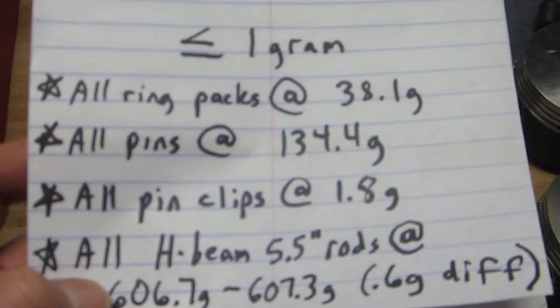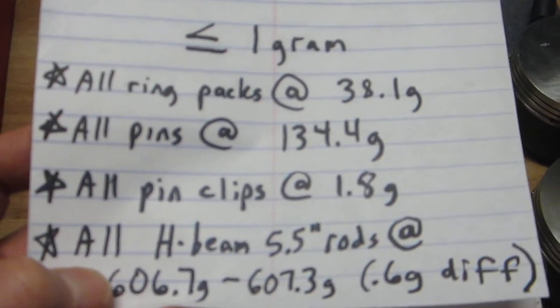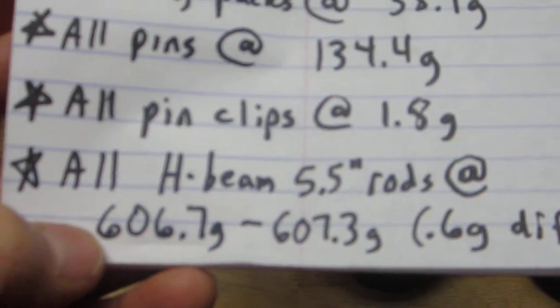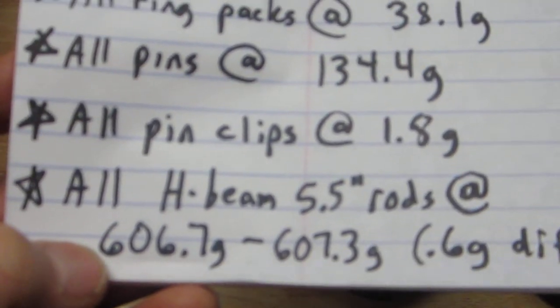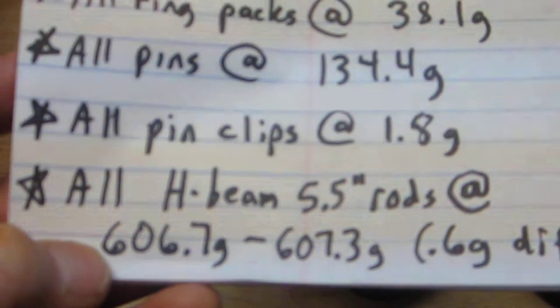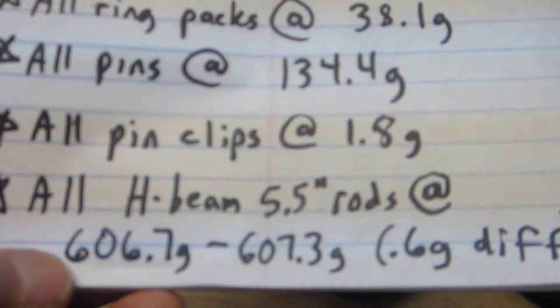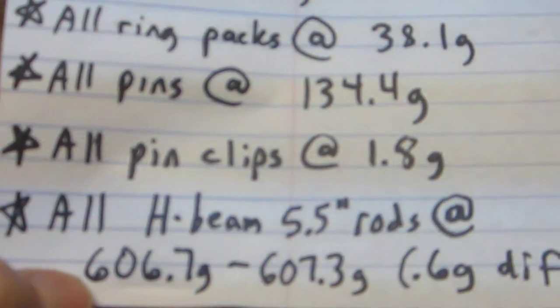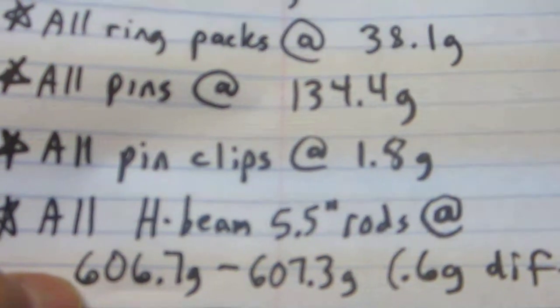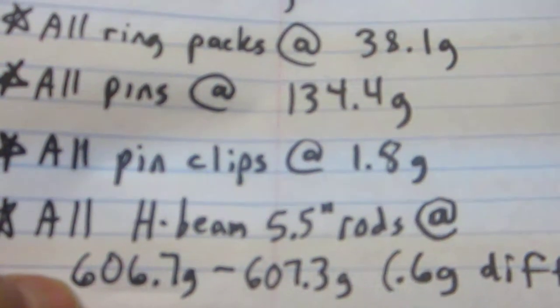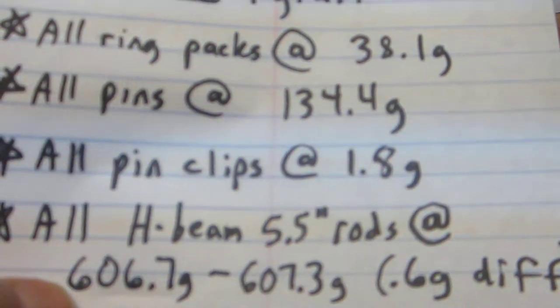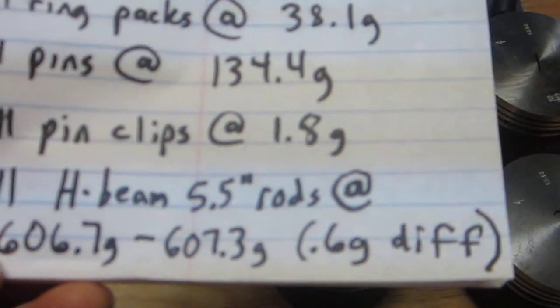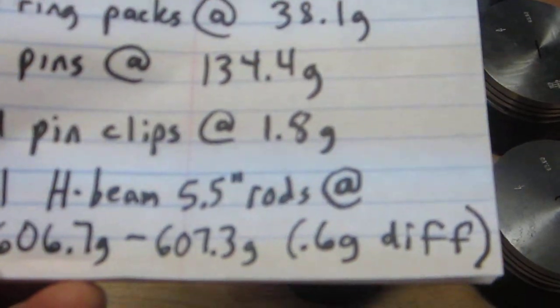The H-beam connecting rods—I've got CB Performance forged chromoly connecting rods, five and a half inches—all of those were between 607.3 and 606.7 grams. So about 0.6 grams difference between the heaviest rod and the lightest. I'm not too worried about any of that.